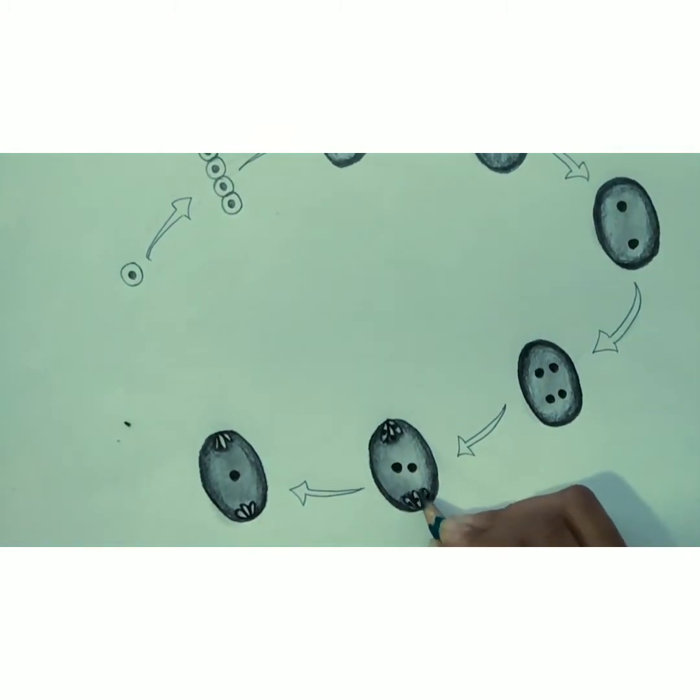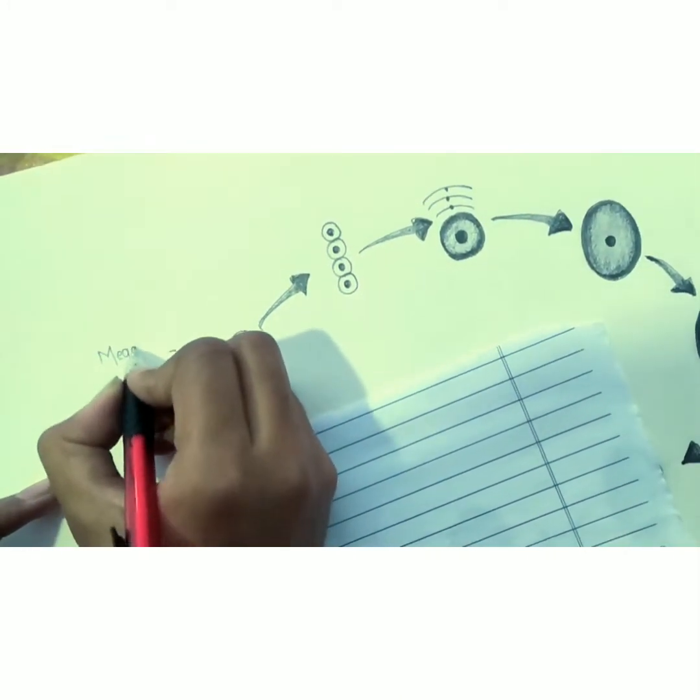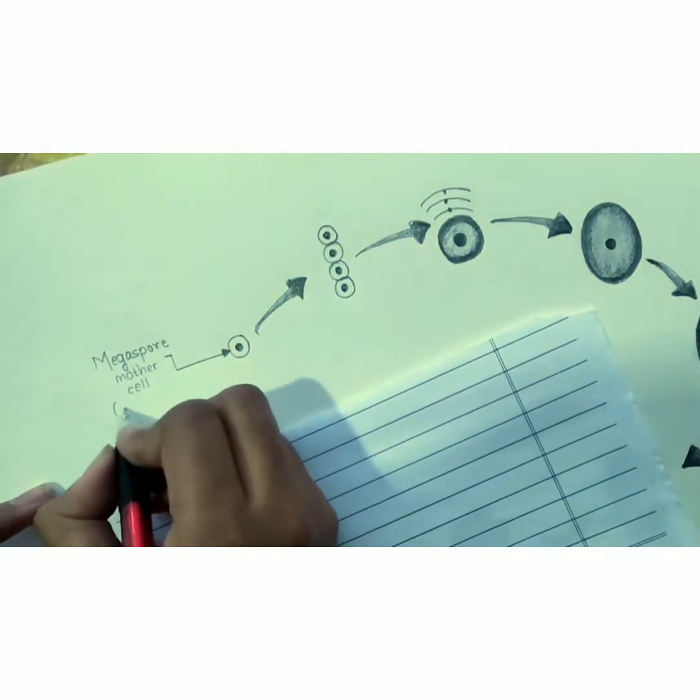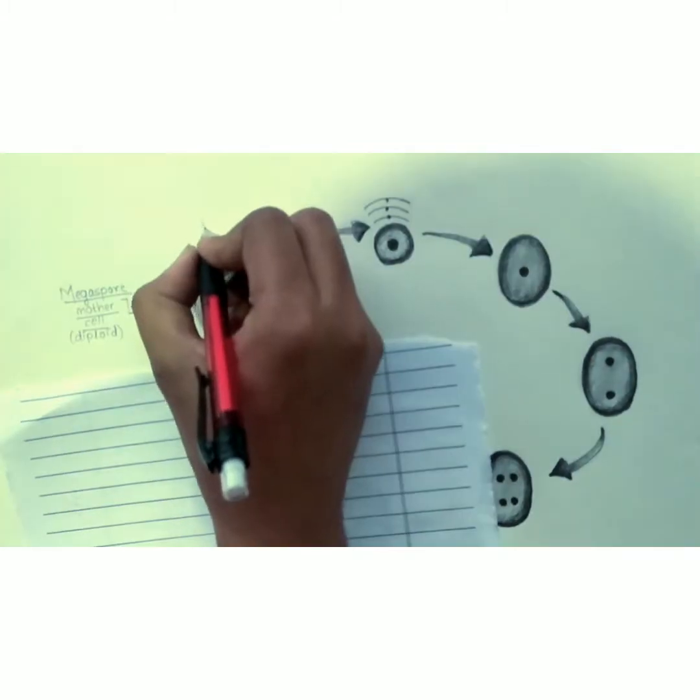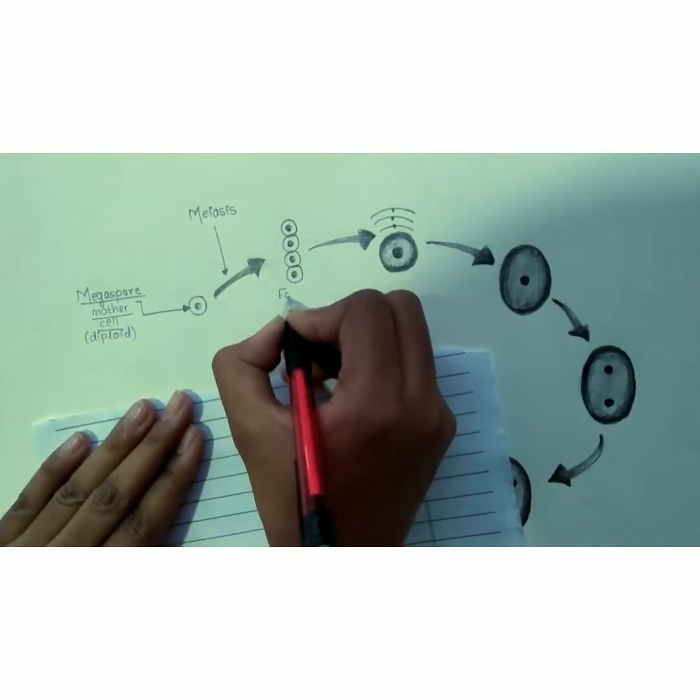Female gametophyte is colorless, endosporic and is concealed in the ovule enclosed by ovary. In angiosperms, the development of female gametophyte is endosporous, that is within the megaspore.